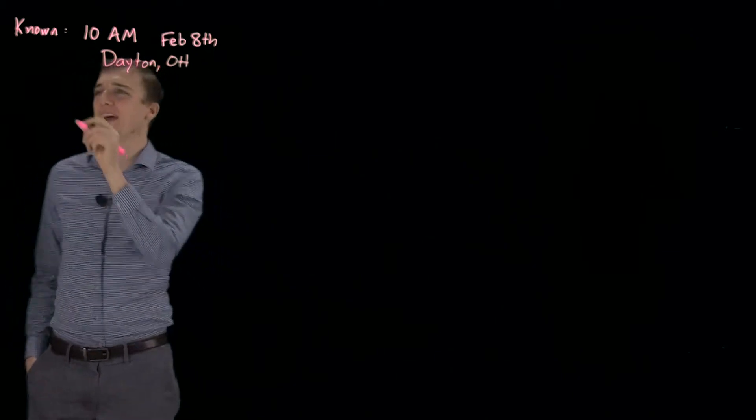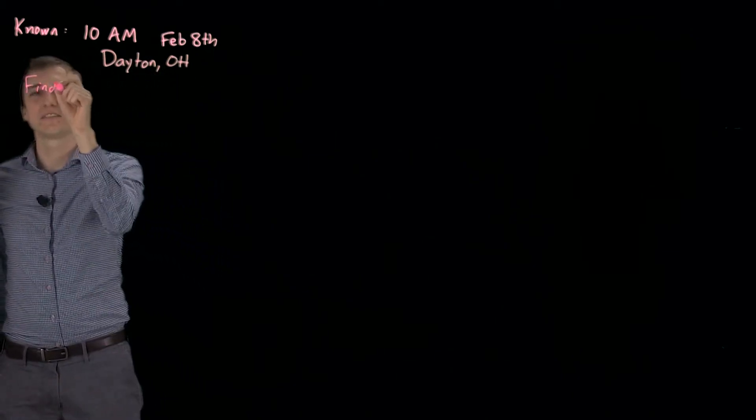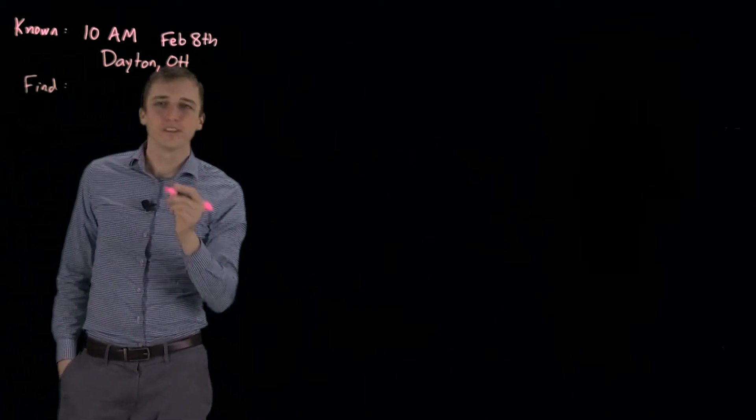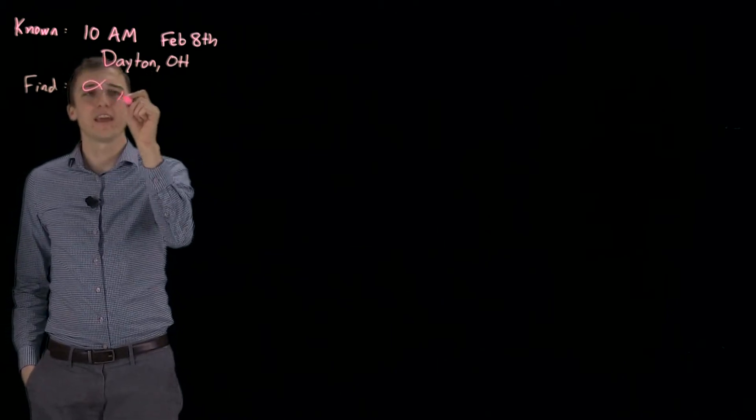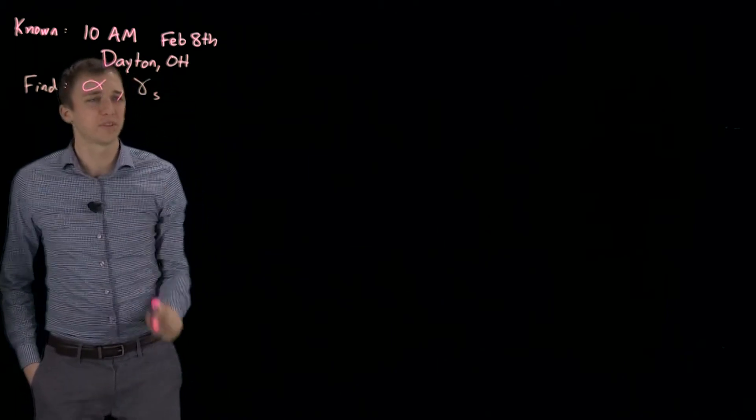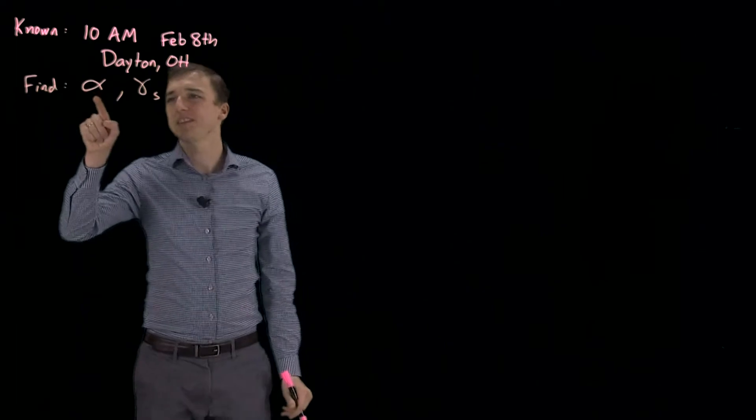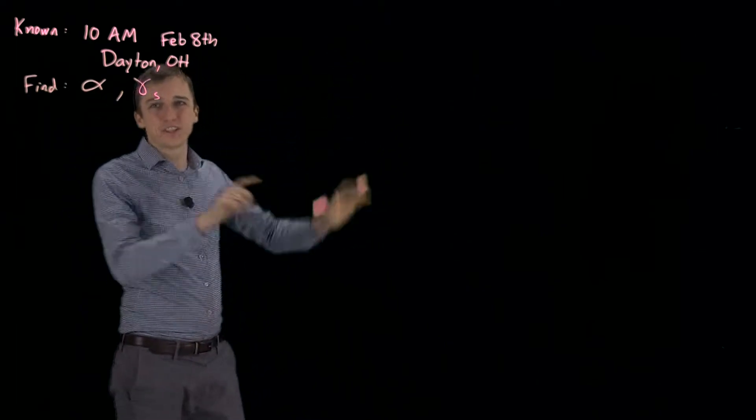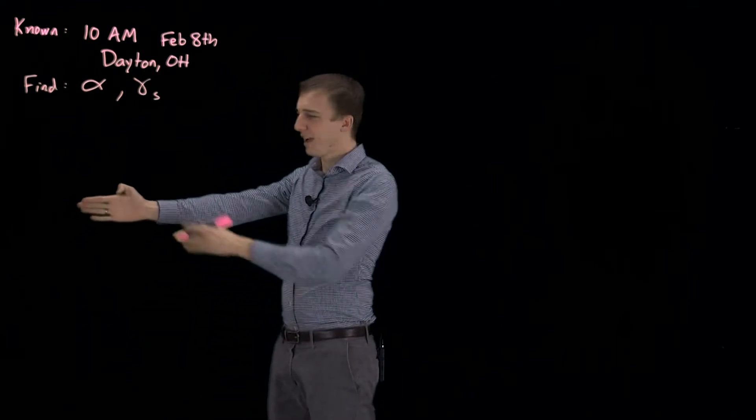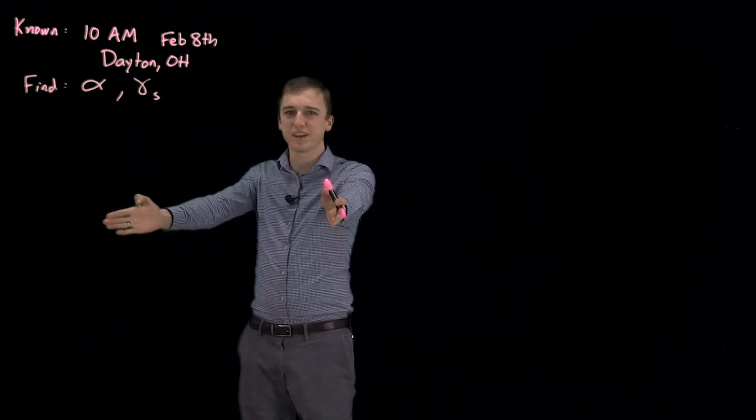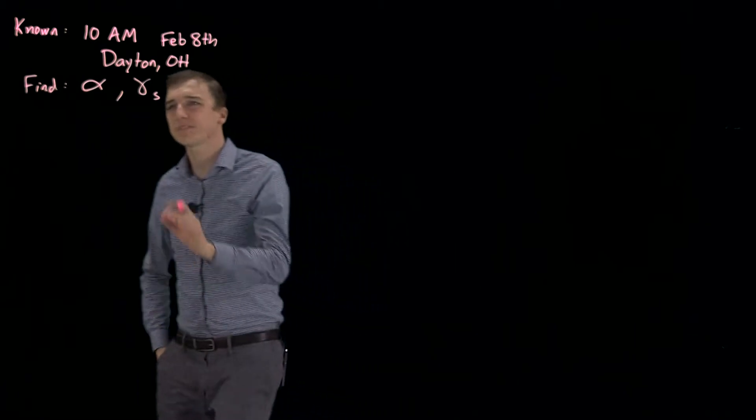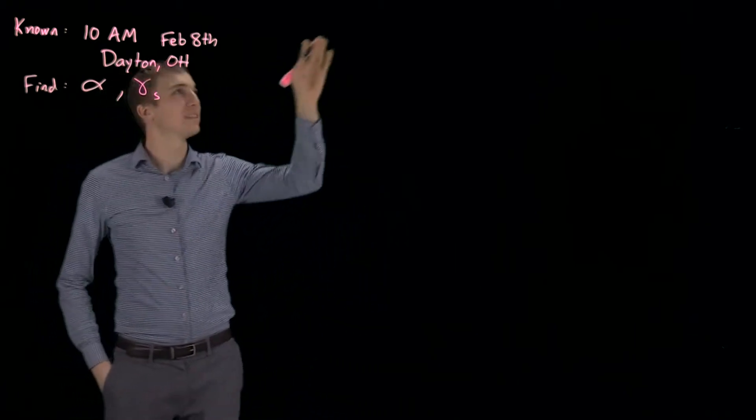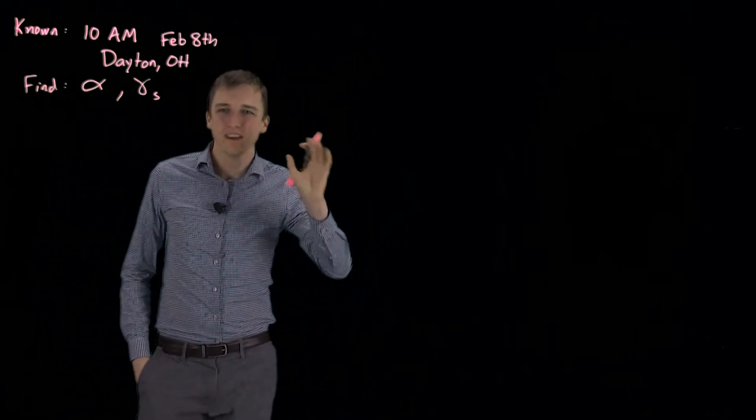And we have been asked to find both the solar elevation and the solar azimuth angle. So remember, this is the angle from the ground to the sun, the elevation. This is the angle from due south to where the sun is on the horizon. So these two angles set the position of the sun in the sky.